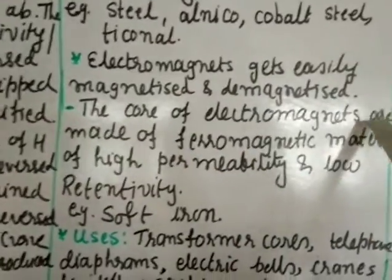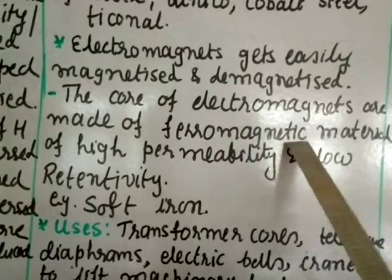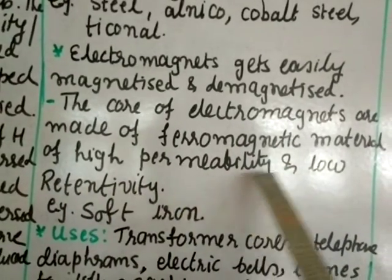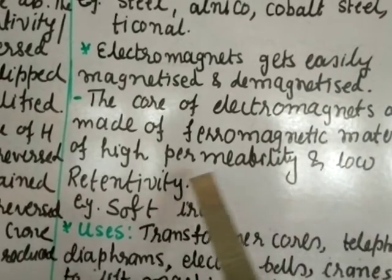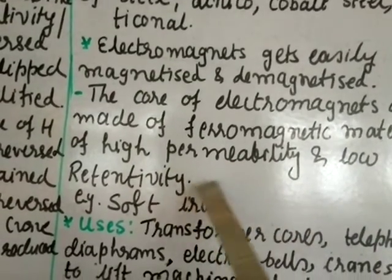The core of electromagnets are made of ferromagnetic materials of high permeability and low retentivity. The material for electromagnets which we select will be having high permeability and low retentivity.